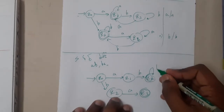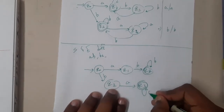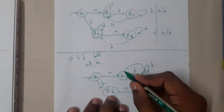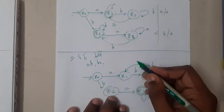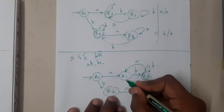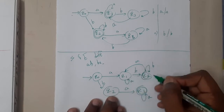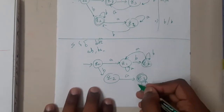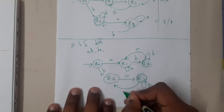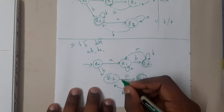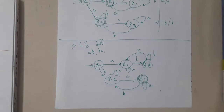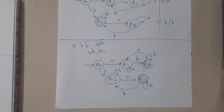We loop when we find continuous 'b's, or loop when we find continuous 'a's. If we get 'a' here we come back; if we get continuous 'a's we loop. Starting with 'a' and ending with 'b' — the same logic applies the other way. If we get 'b' we come back; if we get further 'b's we continue in the loop. This is the diagram for starting and ending with different symbols.